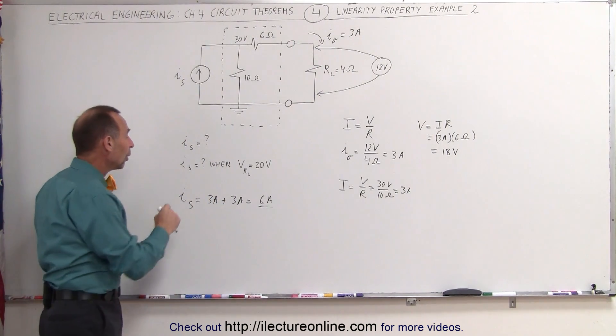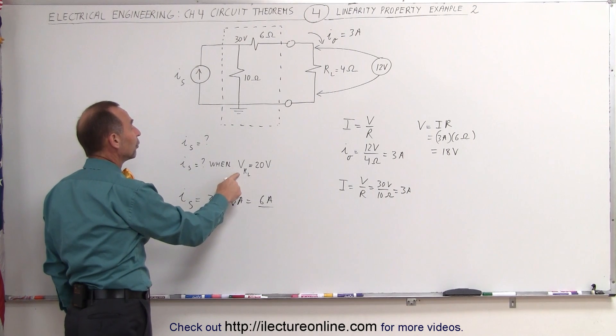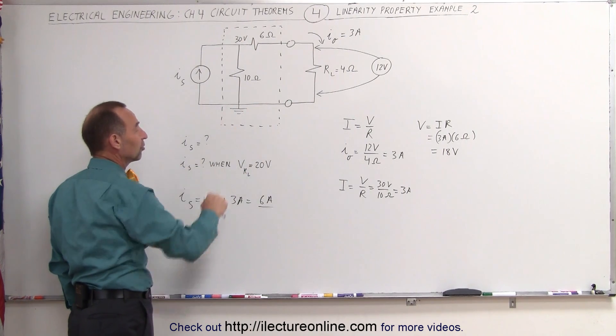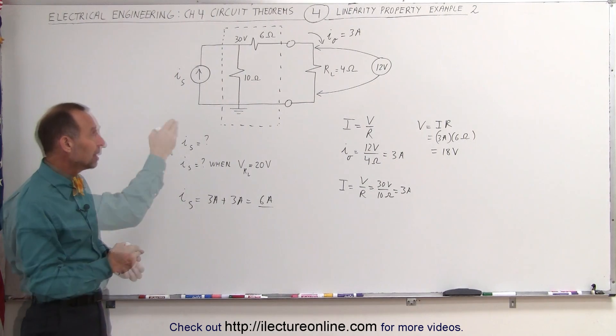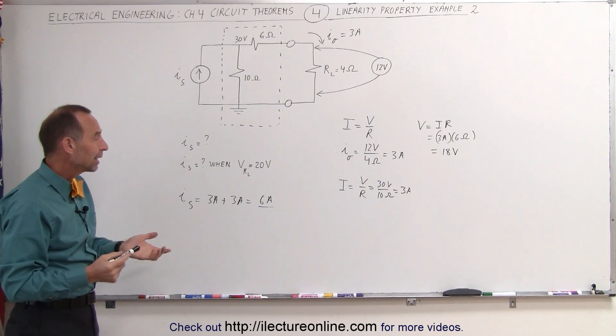Now the question says, what would be the source current if the voltage across the load resistor now went up to 20 volts? Well, there must be a bigger current driving the voltage drop there. How do we calculate that?